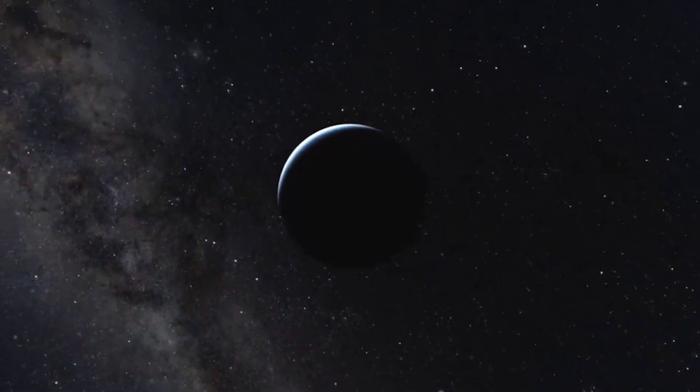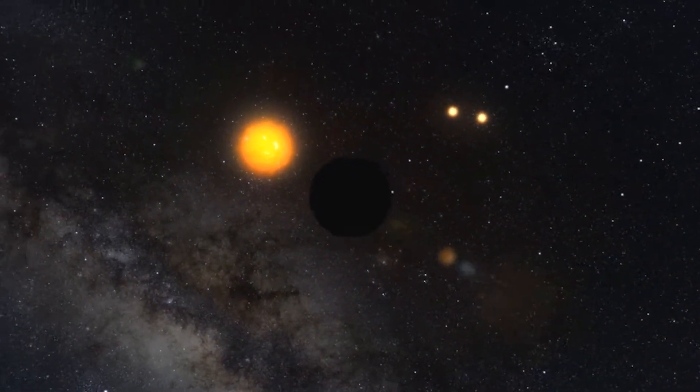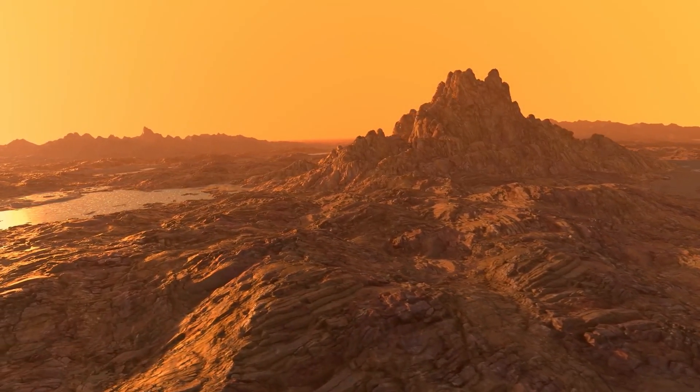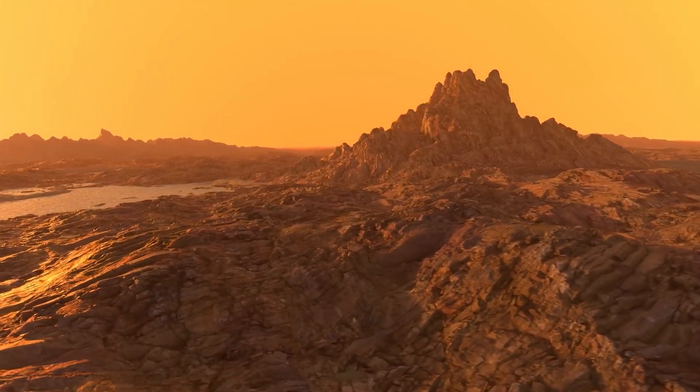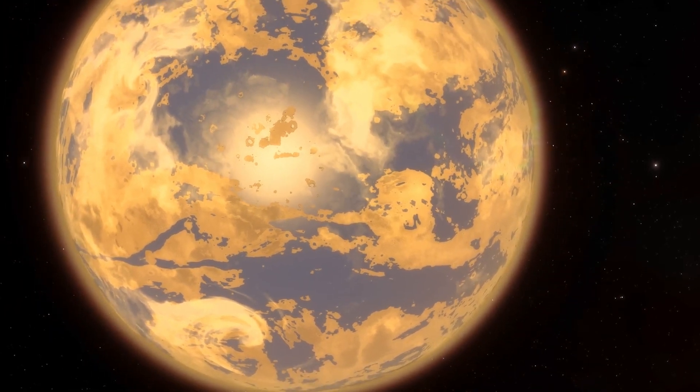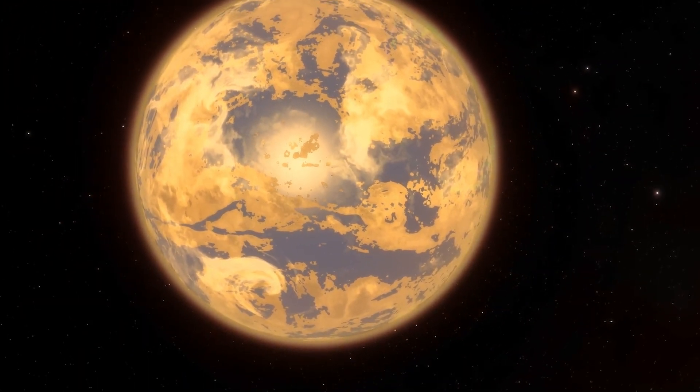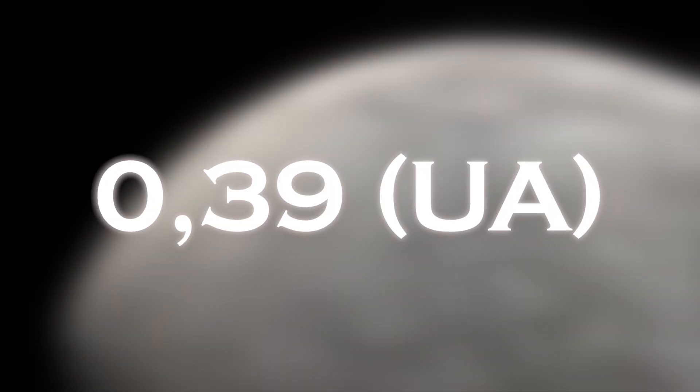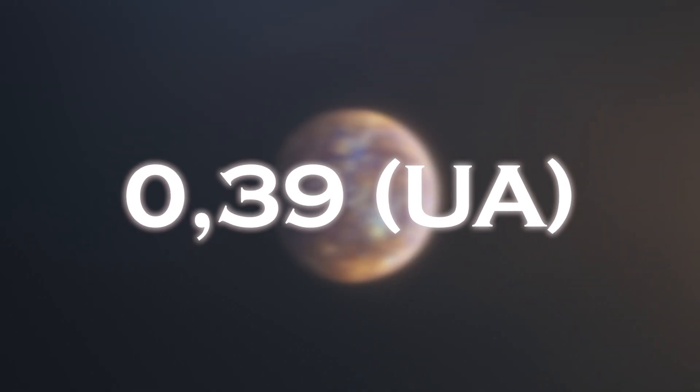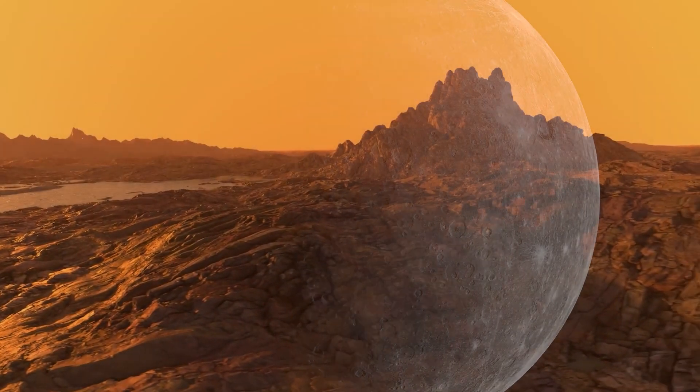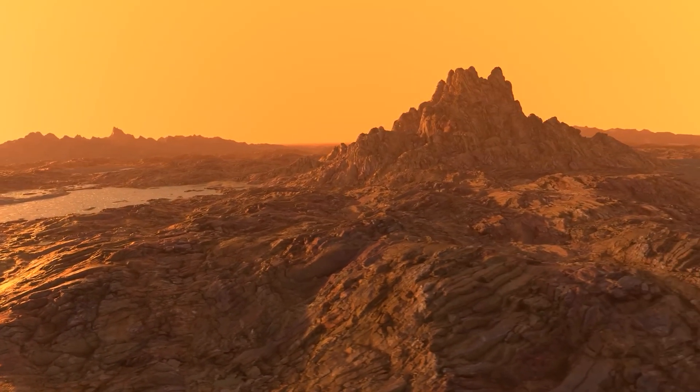On closer examination, Proxima b turns out to be very similar to Earth, with a radius 1.1 times that of Earth and a mass 1.3 times that of Earth, indicating that it is a rocky world with an equivalent density. However, there are significant differences. The first is the location of the two planets in their respective solar systems. Proxima b is much closer to its parent star, at only 0.05 AU, while Mercury is at a distance of 0.39 AU from the Sun. This proximity would make Proxima b an extremely hot planet, but because Proxima Centauri is a dim red dwarf, the planet receives only 60% of the energy that the Earth receives from the Sun, placing it in the habitable zone where life could exist.